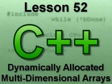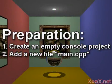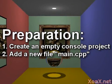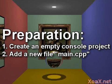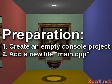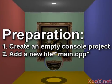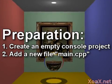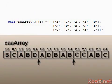Lesson 52: Dynamically Allocated Multi-Dimensional Arrays. To follow along with this lesson, you will need to create a new console project and add a new file named main.cpp to it, as we did in lesson 1. We can create multi-dimensional arrays easily when we know the desired size of the array at compile time.